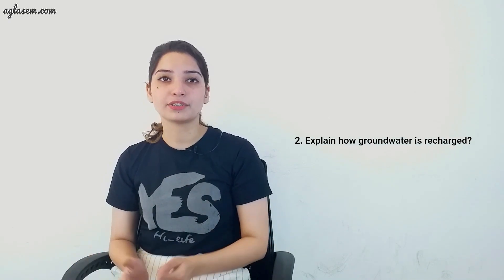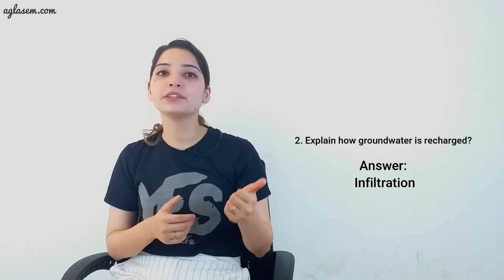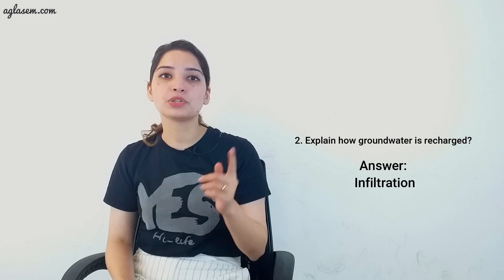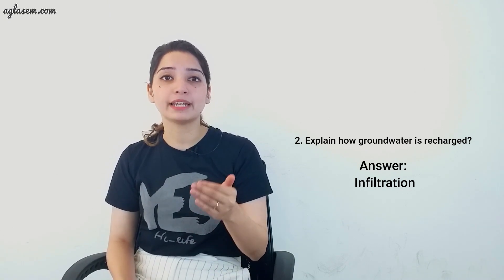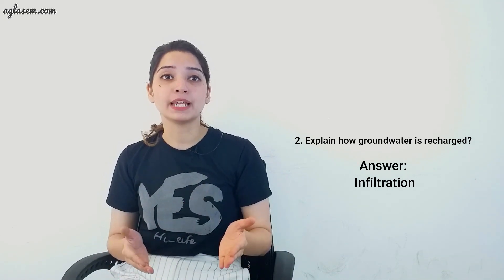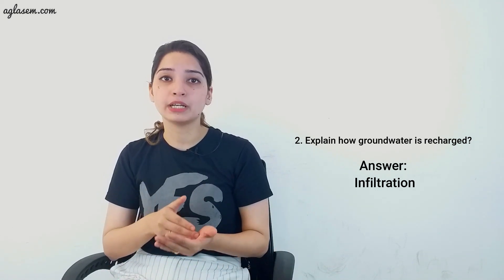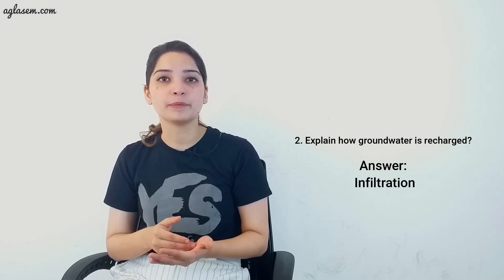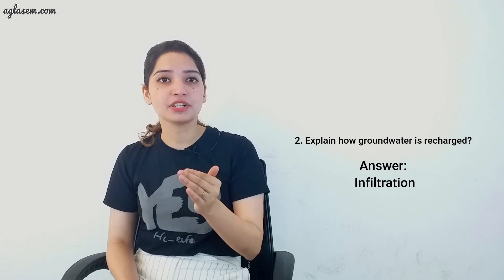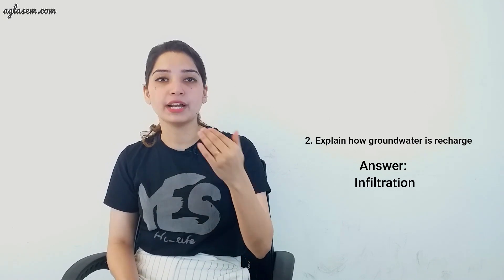Question 2: Explain how groundwater is recharged. The rainwater and water from other sources such as rivers and ponds seep through the soil and through the empty spaces and cracks deep down the ground. This process of seeping of water into the ground is called infiltration, and it is by the process of infiltration that the groundwater gets recharged.